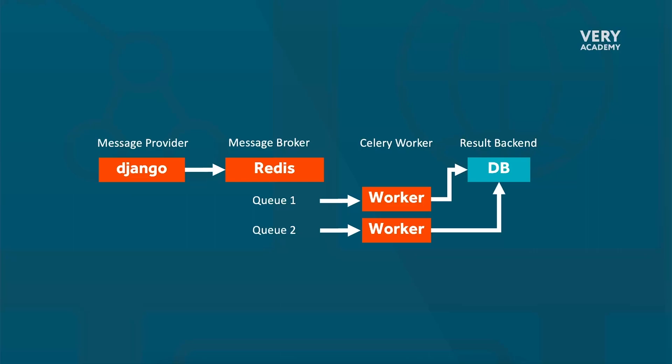Tasks come into the message broker on a first-in, first-out basis — the first task received is the first task picked up by the Celery worker. What we're going to do is create two queues, so we can send tasks from the message broker to either Q1 or Q2. We'll then create two workers, each listening on individual queues.